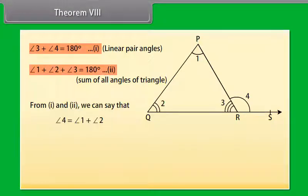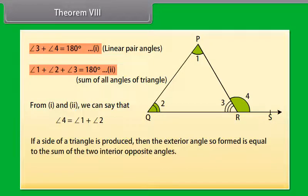From equations 1 and 2, we can say that angle 4 equals angle 1 plus angle 2. This result can be stated in the form of a theorem which says: if a side of a triangle is produced, then the exterior angle so formed is equal to the sum of the two interior opposite angles.